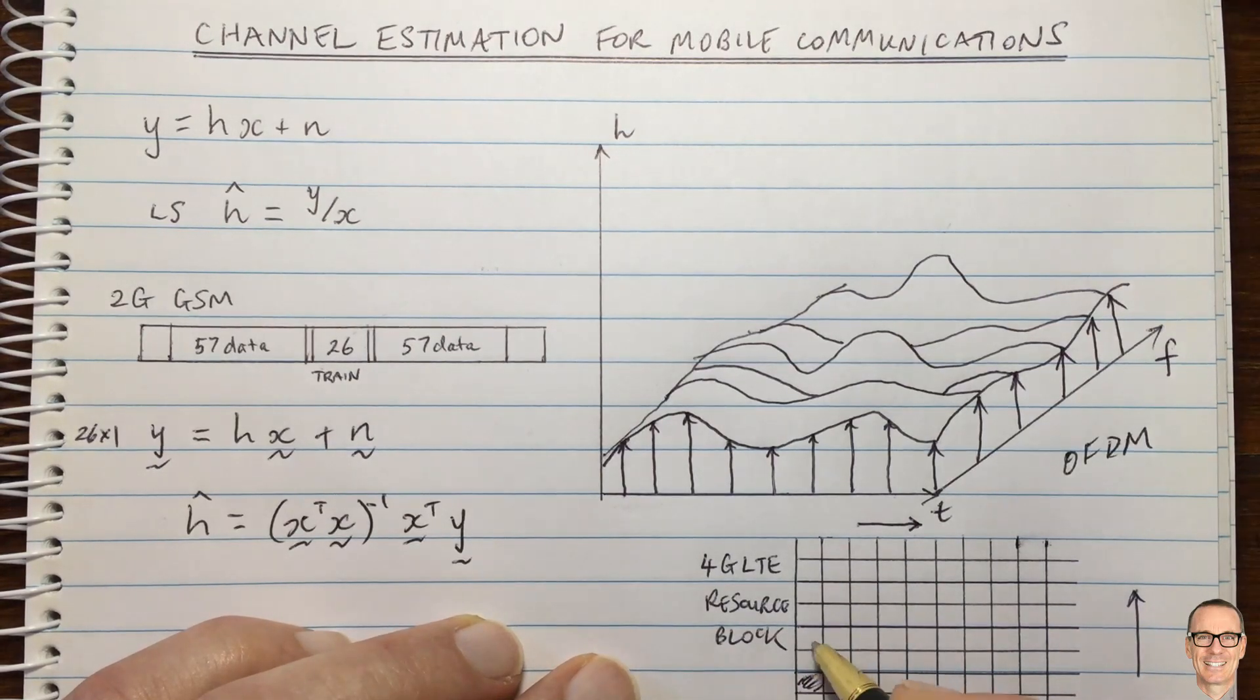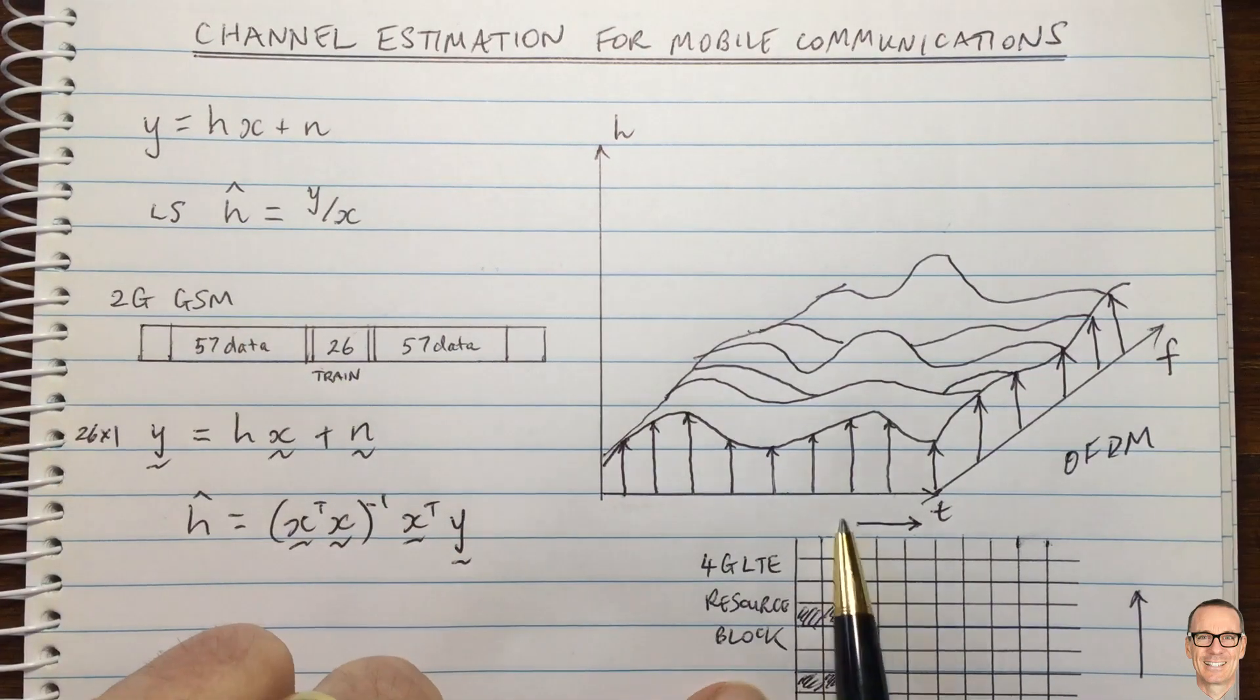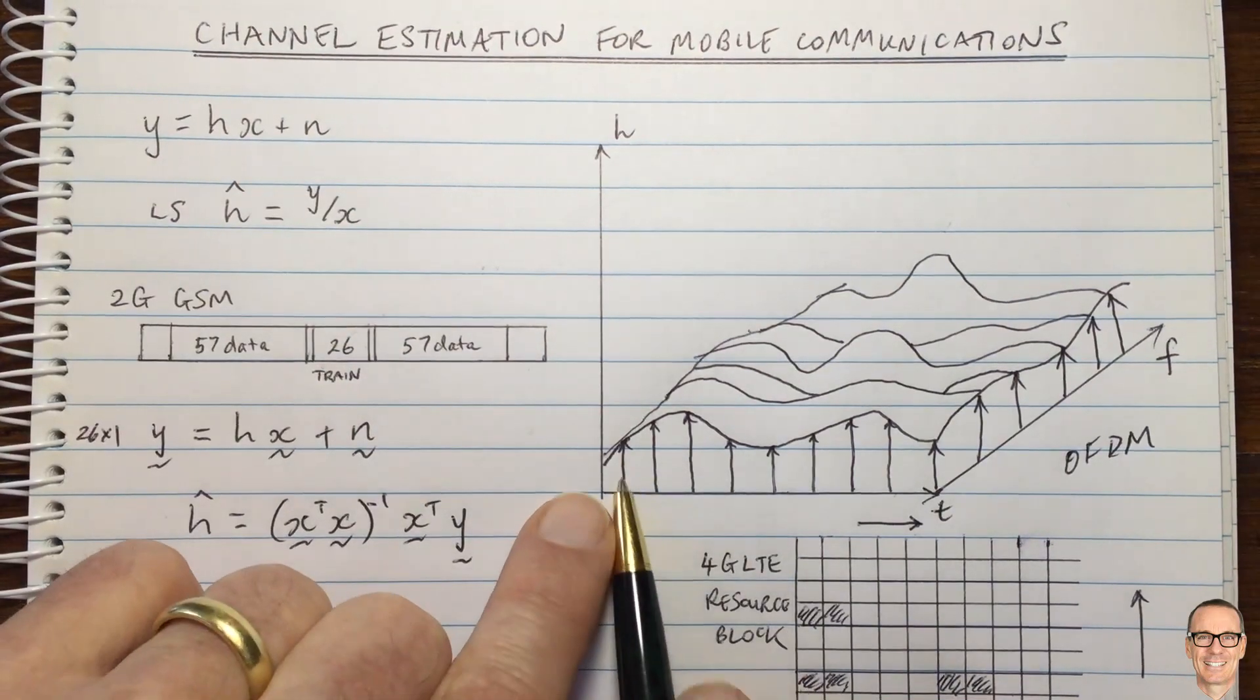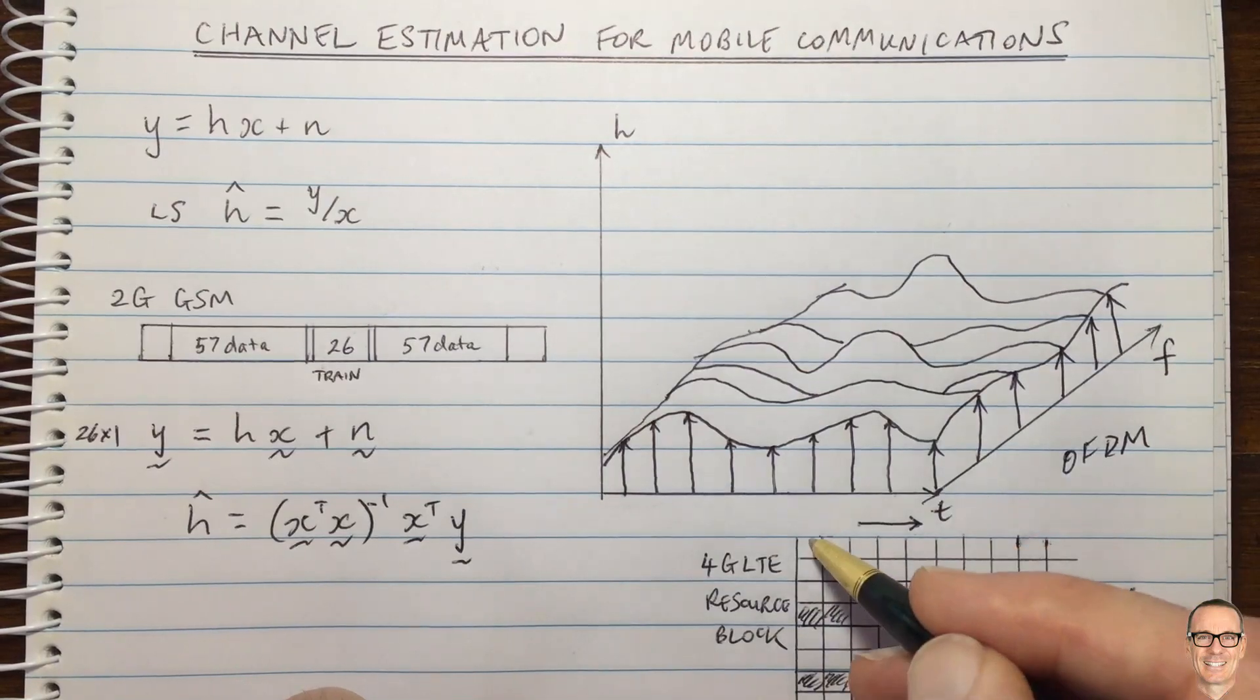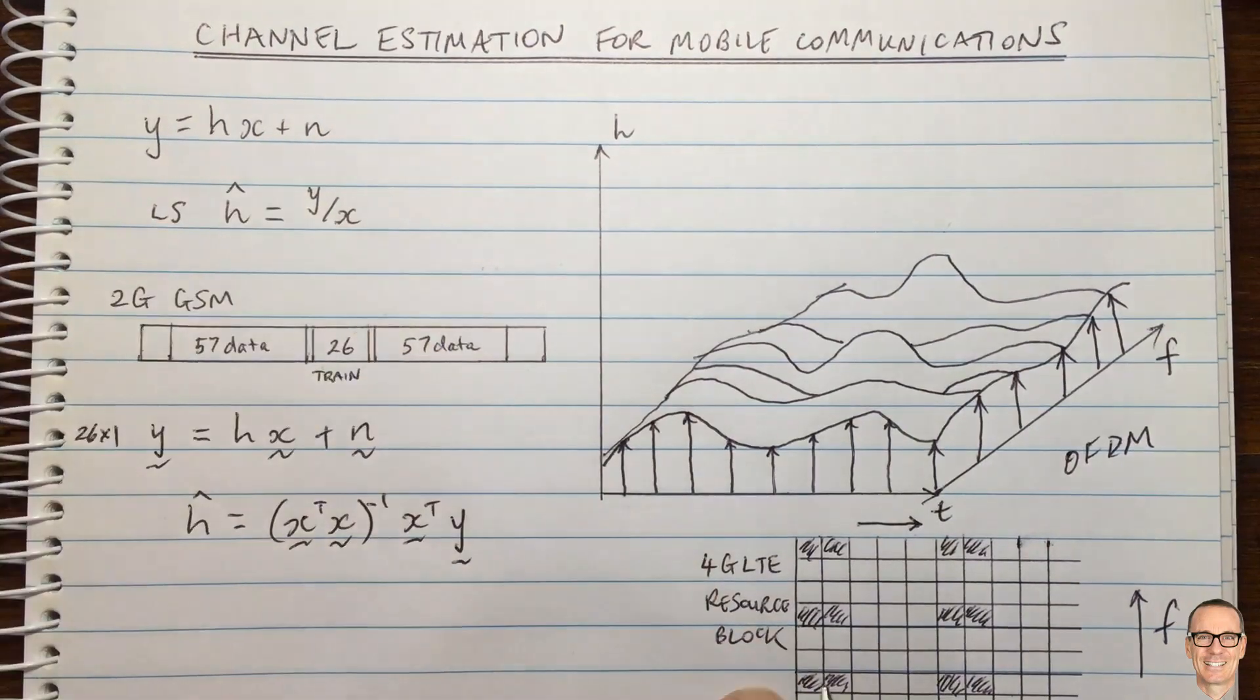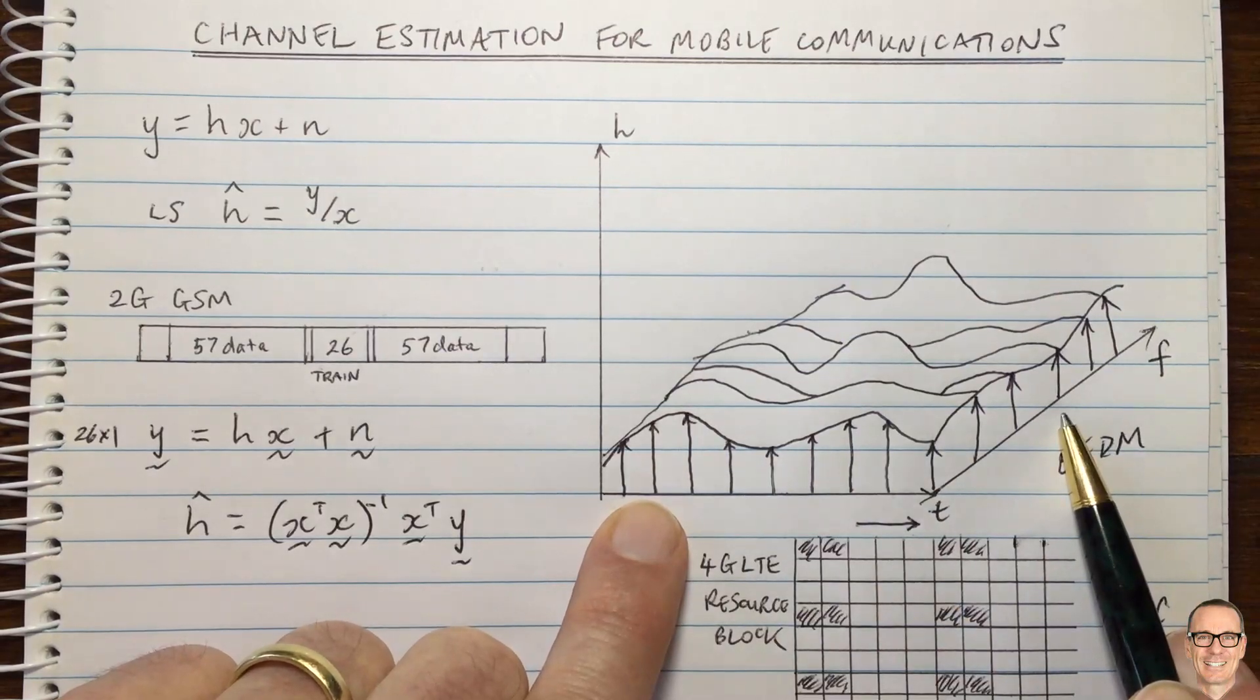You can choose to allocate certain sub-channels for sending training symbols and often they're grouped together. There is an advantage to sending more than one just like there was in GSM. In time you can repeat them after each other. You can send at a later time as well to get two samples here to try to overcome the noise and get more accurate values at those times. You're doing it at different frequencies as well. But you don't have to just pick a regular pattern like I've drawn here. You could pick any pattern and it would be a two-dimensional reconstruction problem.